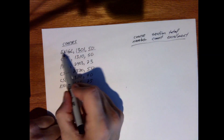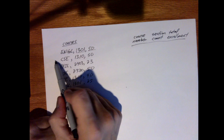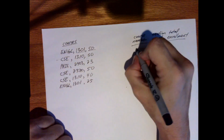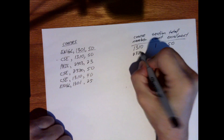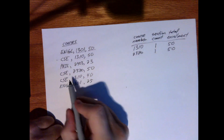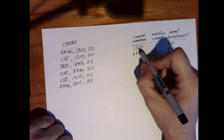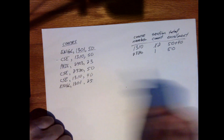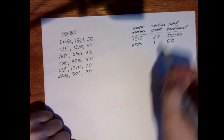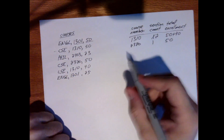Working through this by hand: we're only doing CSE courses, so English — skip it. CSE 1310: one section, enrollment 50. Philosophy — skip. CSE 2320: one section, 50 people. CSE 1310 again with 40 people — 1310 is already on the list, so now I have two sections and 50 plus 40 equals 90. Then English — stop. As I do this, I'm trying to understand my process and what I need to pay attention to when writing my code.